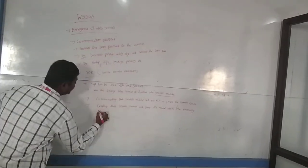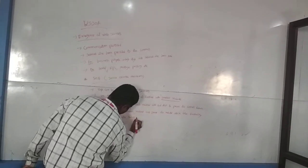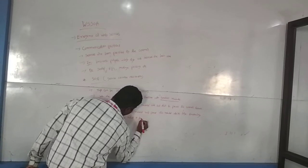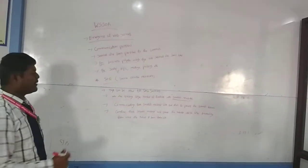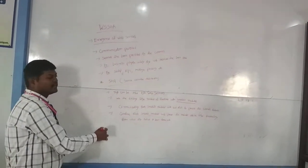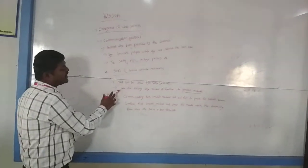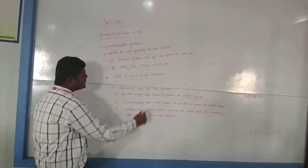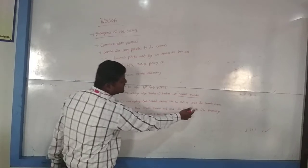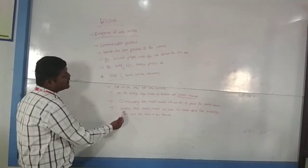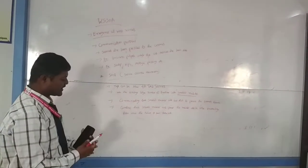From that combined functionality, the result is being taken out. So in SOA — Service-Oriented Architecture — we divide large functionalities into smaller modules, communicate these smaller modules with each other to process the request, then combine them into a large functionality from which the result is taken out.